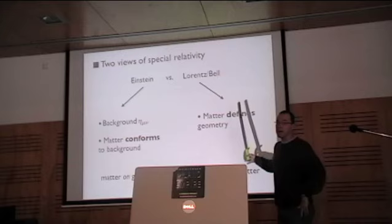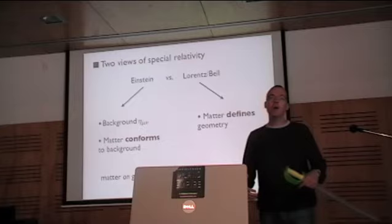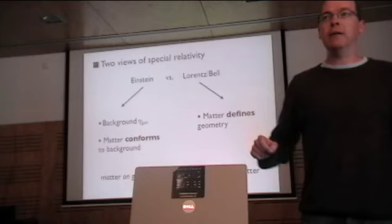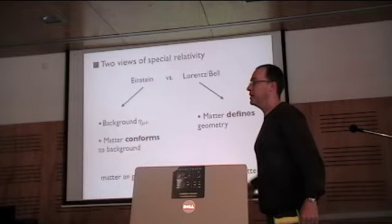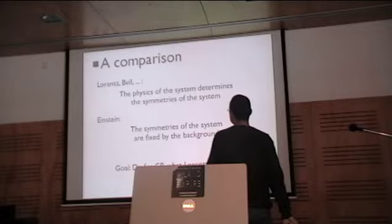This is not the way we look at special relativity these days. What we followed is the path that Einstein set us on, which is that we have some background which is Minkowski space, and then we look at matter that conforms to that background. So it's very different. On one side you have matter that defines geometry, on the other side you have matter that is on a certain geometry and you ask it to conform to that geometry.